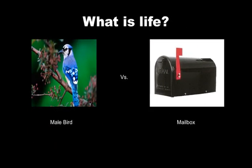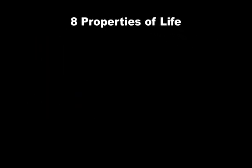Even before we get into the details, it is important to determine what objects in our world have life. This may seem simple, like determining whether a bird or a box is alive, but we really need to think about the individual properties that make up life. There are eight that we are going to discuss. What are some things you thought life had to have in order to be considered life? We're going to look at the eight specific ones now.